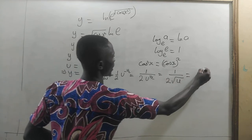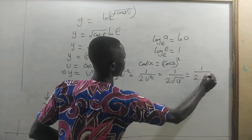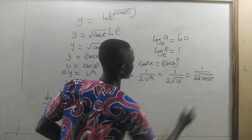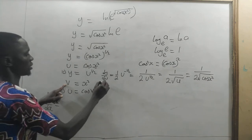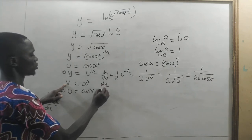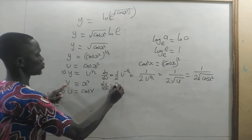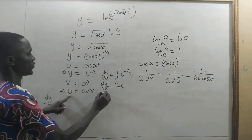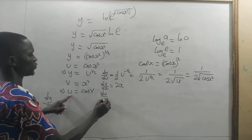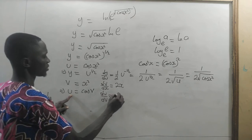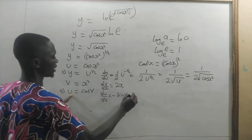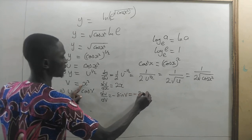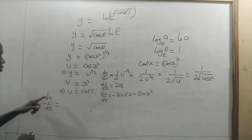And this is the same as 1 divided by 2 square root of cosine x squared. Now, the derivative of v with respect to x is equal to 2x. And here, the derivative of u with respect to v is equal to minus sin v. That is equal to minus sin x squared.